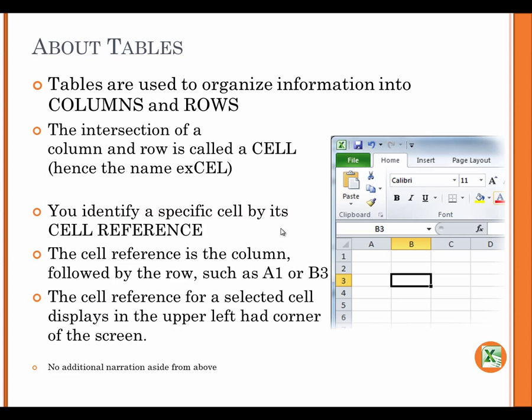About Tables. Tables are used to organize information into columns and rows. The intersection of a column and row is called a cell, hence the name Excel. You identify a specific cell by its cell reference. The cell reference is the column followed by the row, such as A1 or B3. The cell reference for the selected cell displays in the upper left hand corner of the screen.